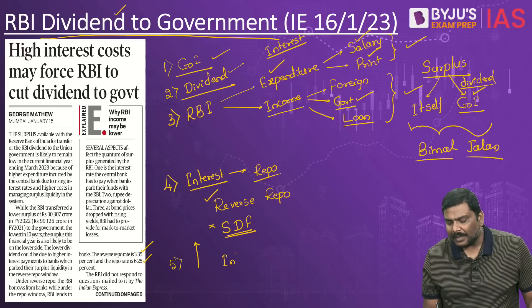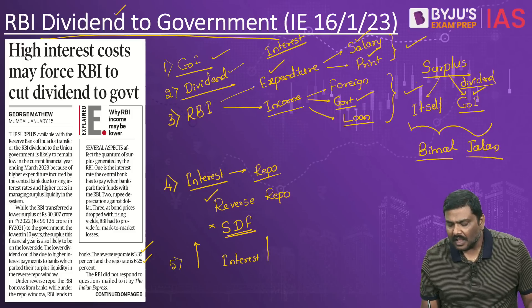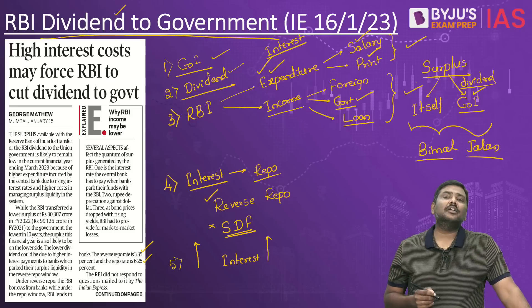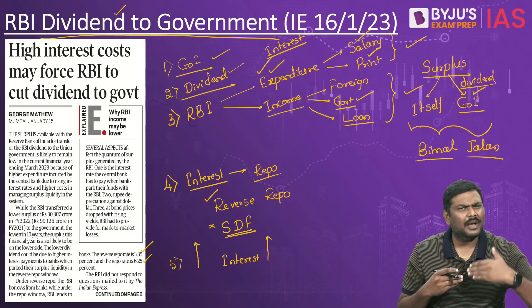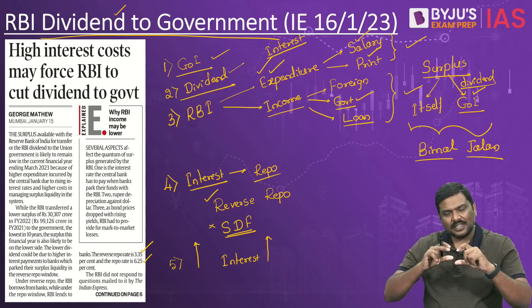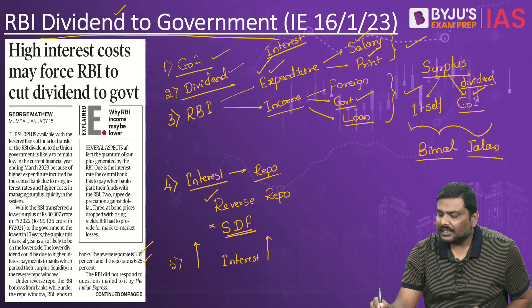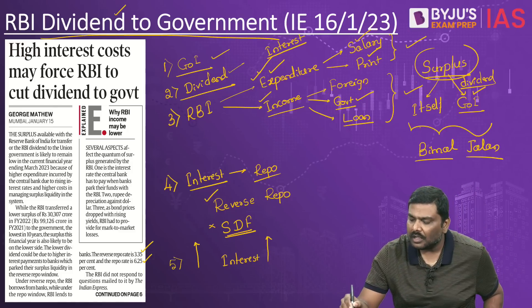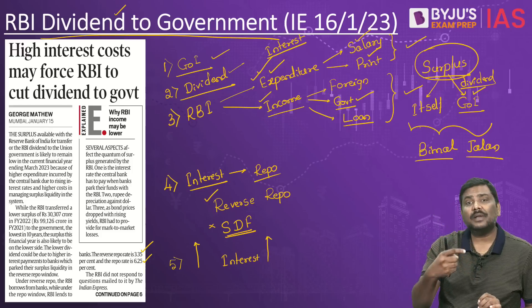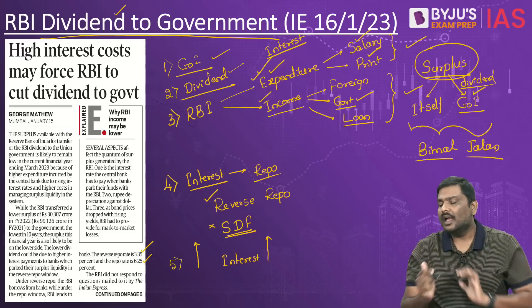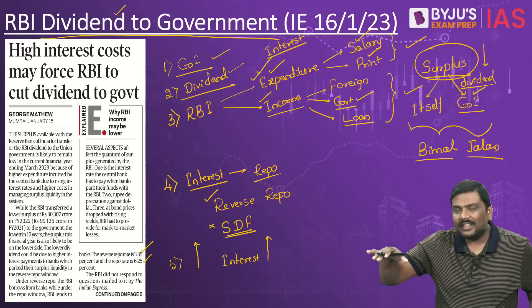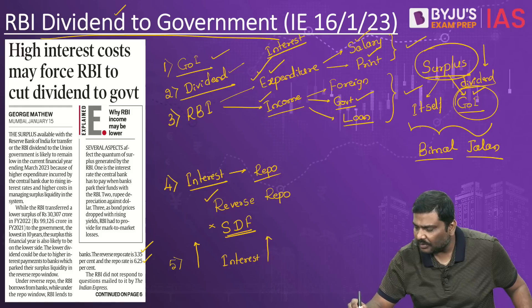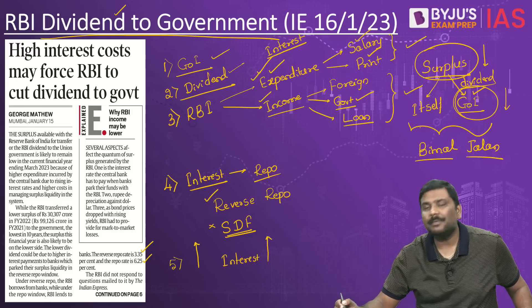With rising interest paid by RBI, expenses have increased, meaning the difference between expenditure and income has come down. The surplus earned by RBI has declined. And with a drop in the surplus earned by RBI, the dividend given to Government of India is also expected to come down.